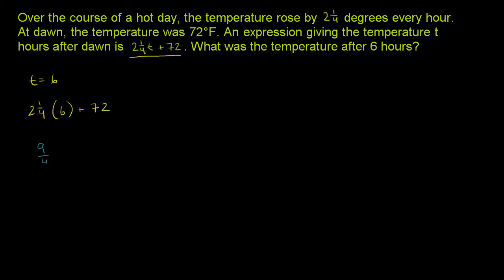So this becomes 9 over 4 times 6. We can write 6 as 6 over 1 plus 72.